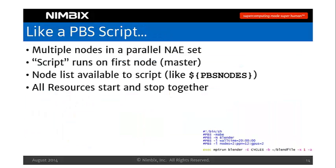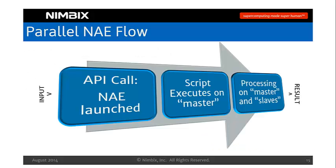Running jobs this way is very much like a PBS script. There are multiple nodes in a parallel NAE set. If you submit a PBS job on your own cluster and tell it to select four nodes, you get four machines, and the script runs on the first machine — not on all four. That machine has a node list available via the PBS_NODES variable in your scripting, where you can step through and query which nodes are in the set. Most importantly, all resources start and stop together — once your script runs, all that hardware is available right now. This is exactly the spirit of the parallel NAE, except it's not presenting PBS to you — it does everything automatically.